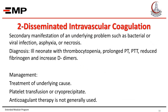Disseminated intravascular coagulation (DIC) is usually a secondary manifestation of underlying problems such as bacterial or viral infection, asphyxia, or necrosis. Diagnosis is made clinically by finding thrombocytopenia, prolonged PT and PTT, reduced fibrinogen, and elevated D-dimers. Management requires treating the underlying cause and giving platelet transfusion or cryoprecipitate. Anticoagulation therapy is not generally helpful.